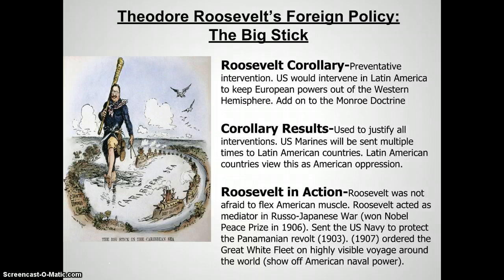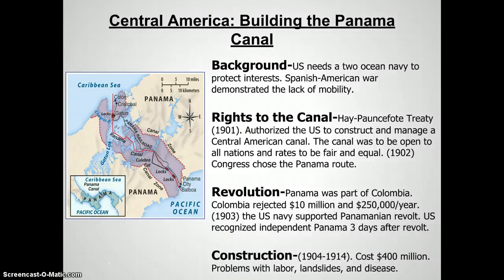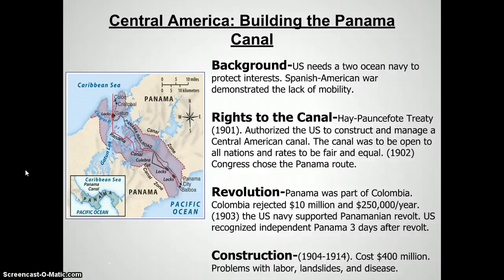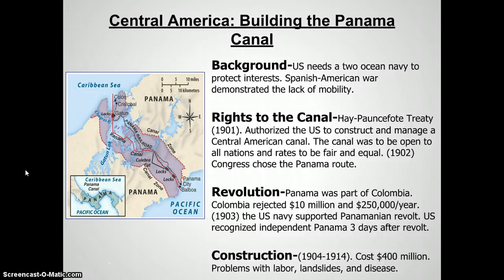Roosevelt will take action on a global scale in a number of ways, but perhaps most notable is the construction of the Panama Canal. For many years, European nations and the United States had been eyeballing this very narrow part of Central America to cut a canal through so that ships didn't have to go all the way down around the southern part of South America to get to the Pacific Ocean. Roosevelt looks at where the French had started building a canal, and in this area of Panama, that territory was actually held by the nation of Colombia. Roosevelt wants this canal because it will make the United States Navy that much more mobile and powerful, and so he will go to Colombia and offer to basically purchase the rights to the land.